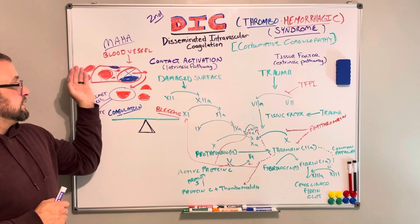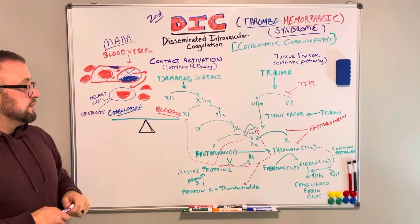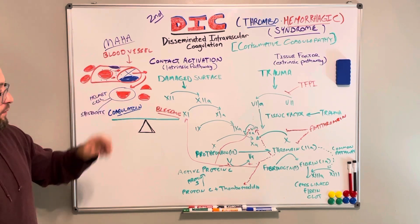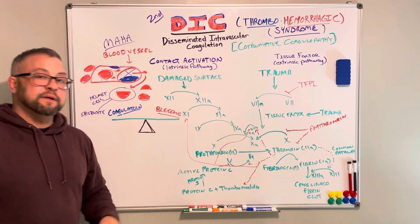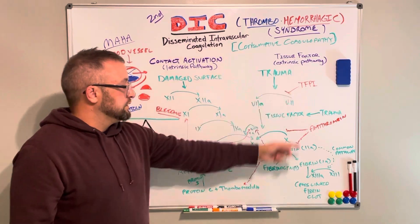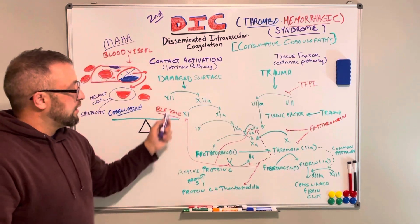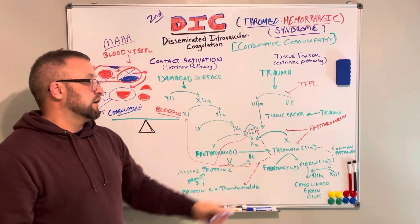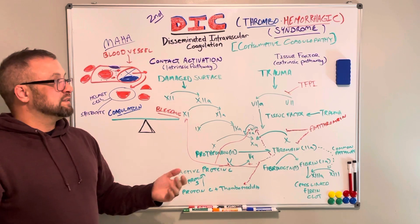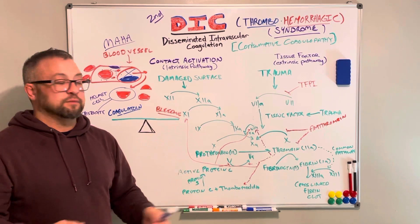As the clot's usefulness ends and the vessel wall heals, the clot is completely dissolved out — that's why we look for those markers. What happens in DIC is this process goes on in excess until all of the clotting factors are used up.